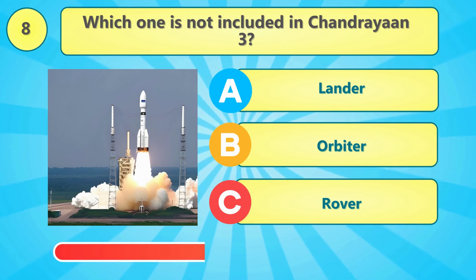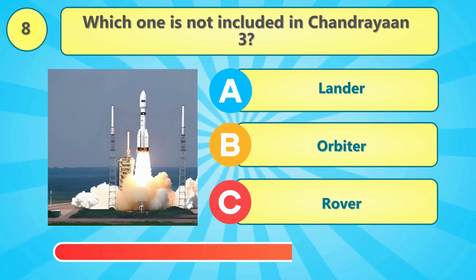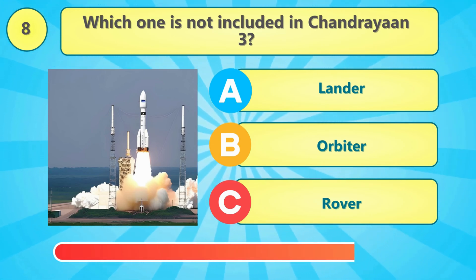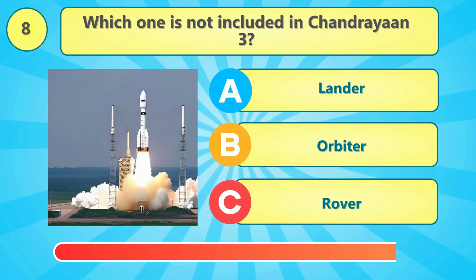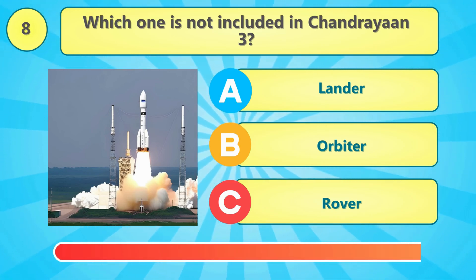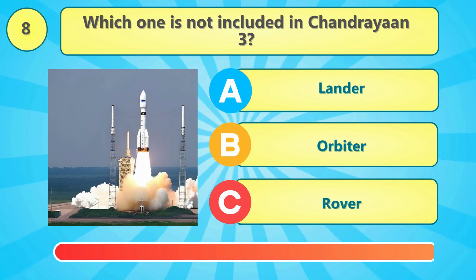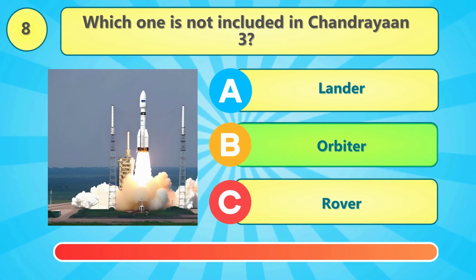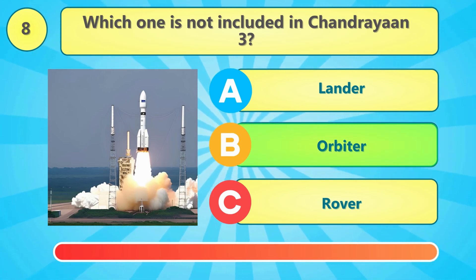Which one is not included in Chandrayaan 3? That's right, it's the Orbiter.